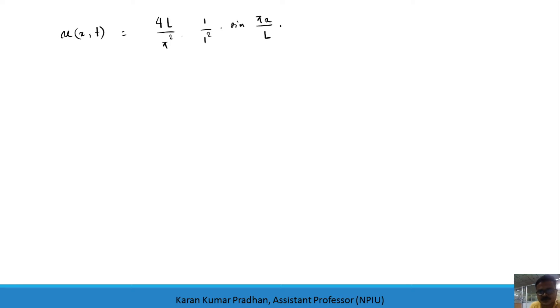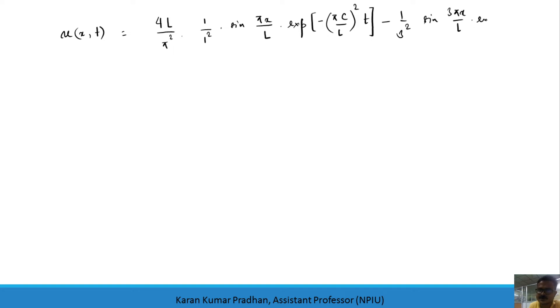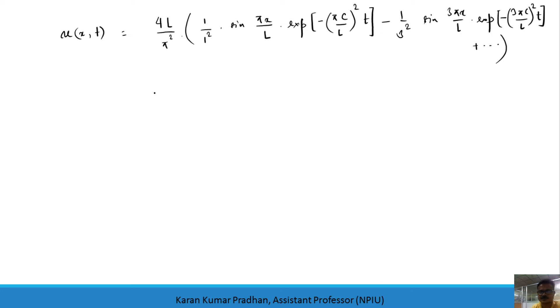For the heat equation with triangular initial temperature, the solution is: u(x, t) = (4L/π²)[sin(πx/L)·e^(−(πc/L)²t) − (1/9)·sin(3πx/L)·e^(−(3πc/L)²t) + ...], which is an infinite series. The factor 4L/π² is common to all terms.